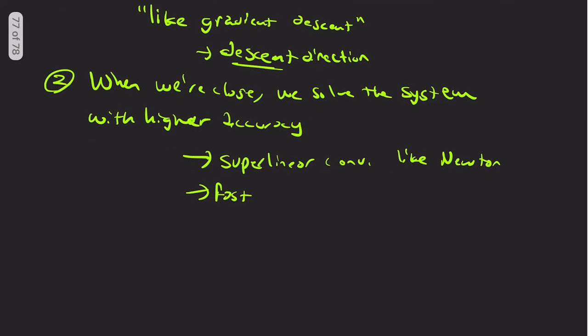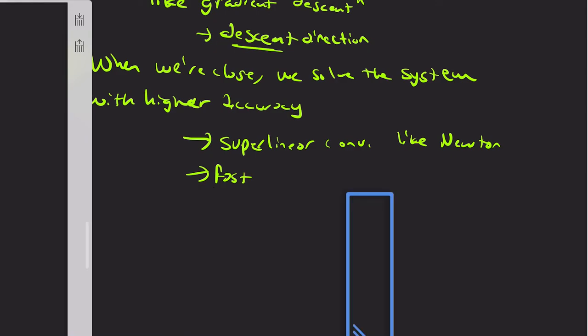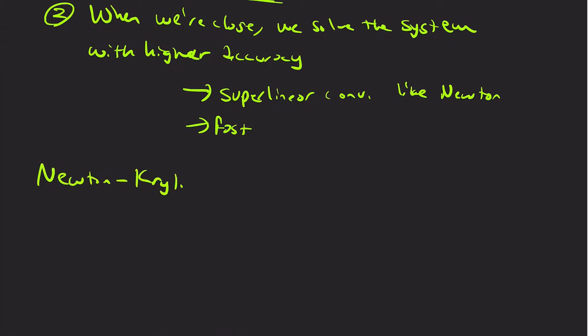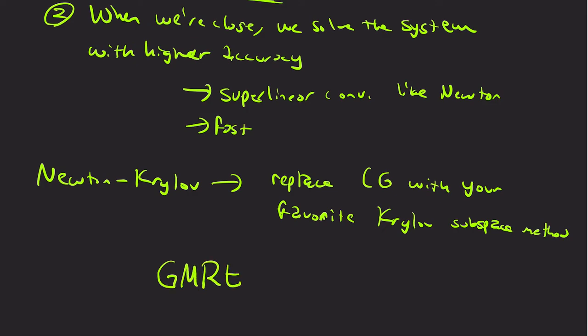So hopefully that motivates Newton-CG. And then as far as Newton-Krylov, just replace CG with your favorite Krylov subspace method. So CG is a Krylov subspace method, and so probably the most famous Krylov subspace method other than CG is probably GMRES. But it's the same idea. You're not exactly solving the matrix equation because you don't actually know if the quadratic is a good approximation anyway. So why waste all your computational resources on solving it super accurately? But when you get close, then use your computational resources because you'll expect this crazy fast conversion.